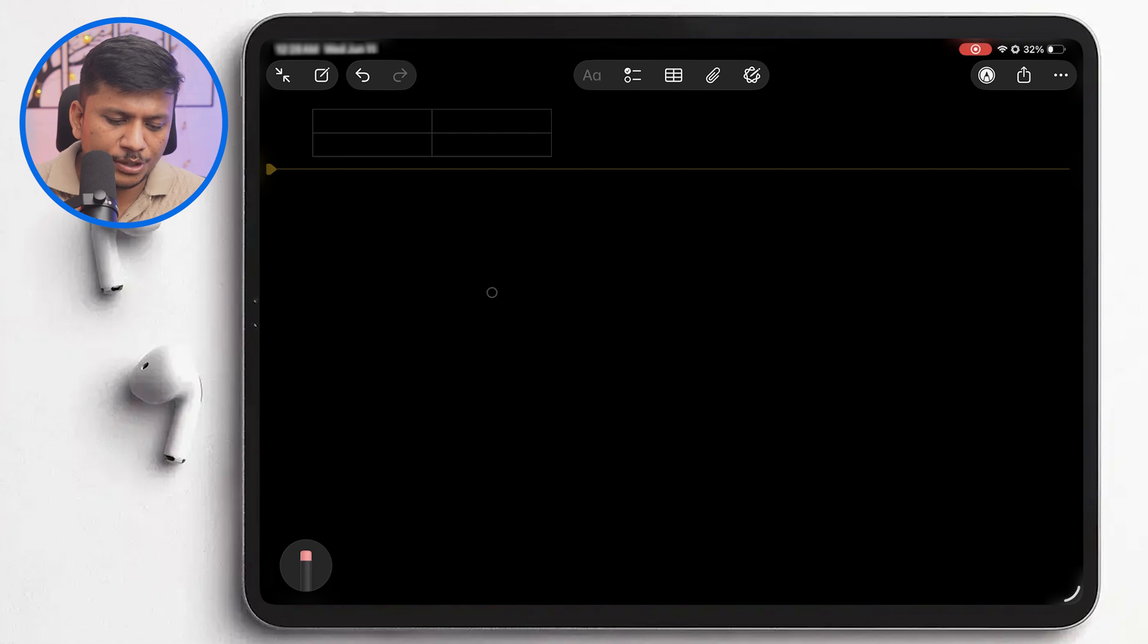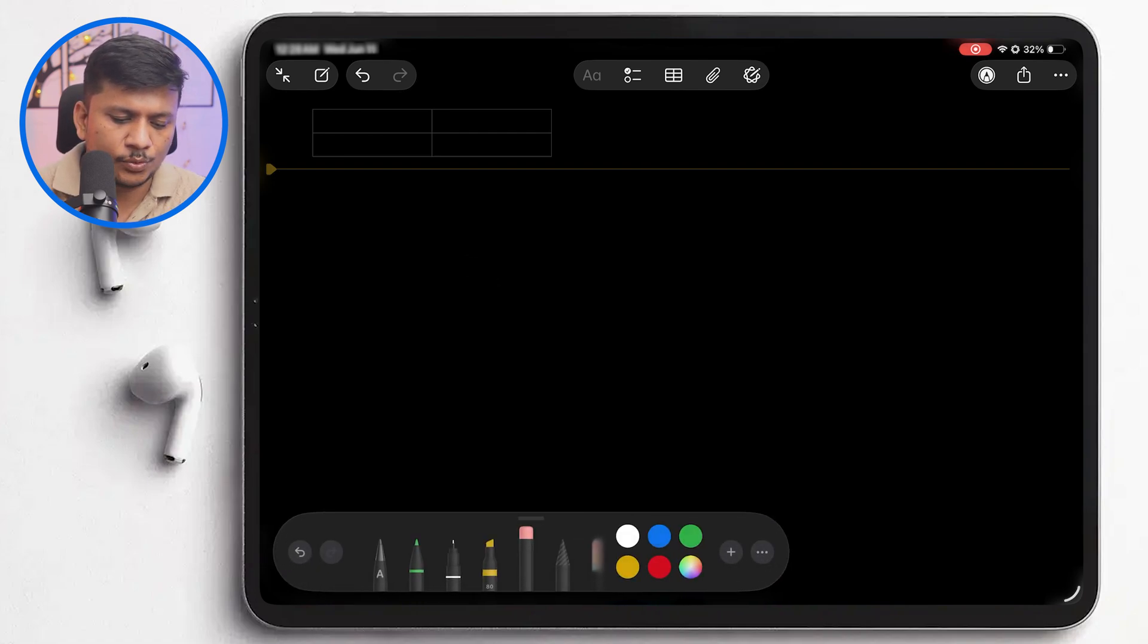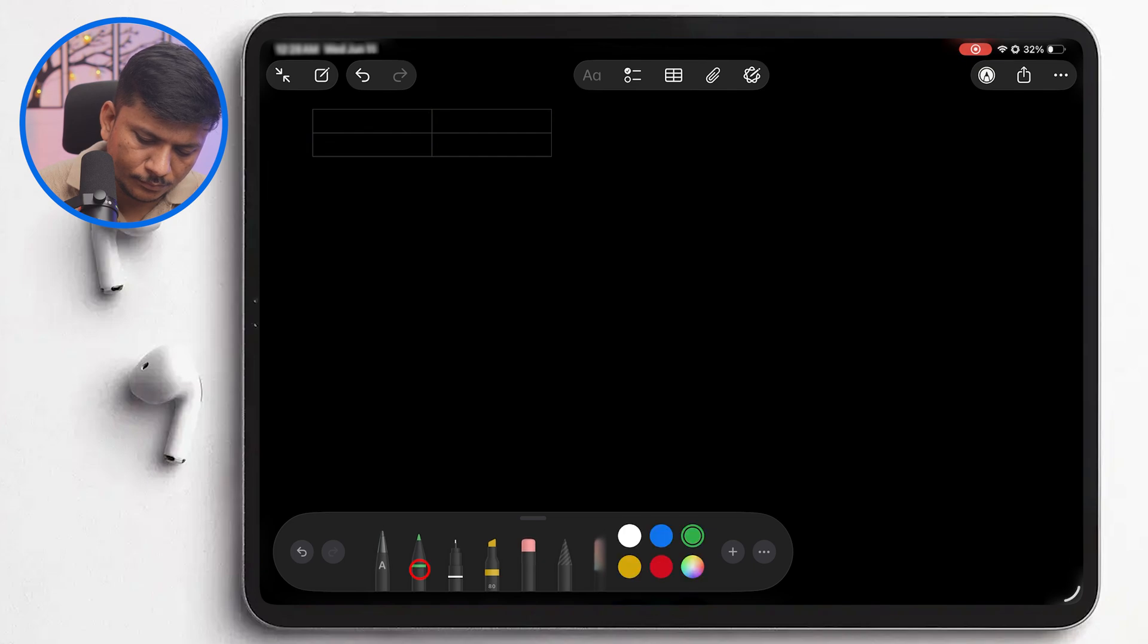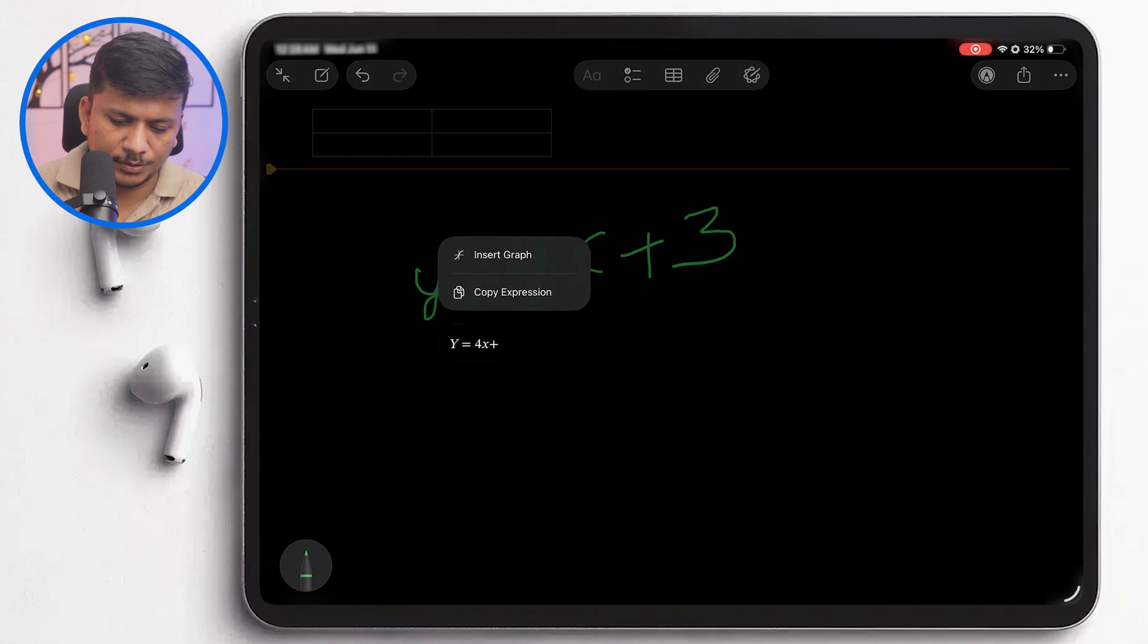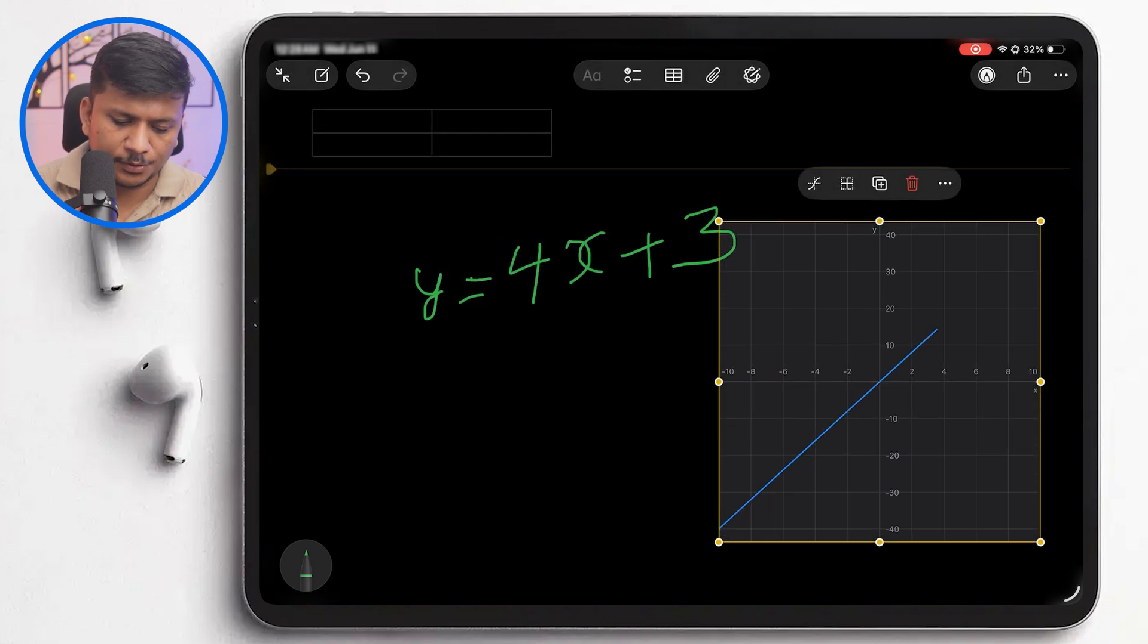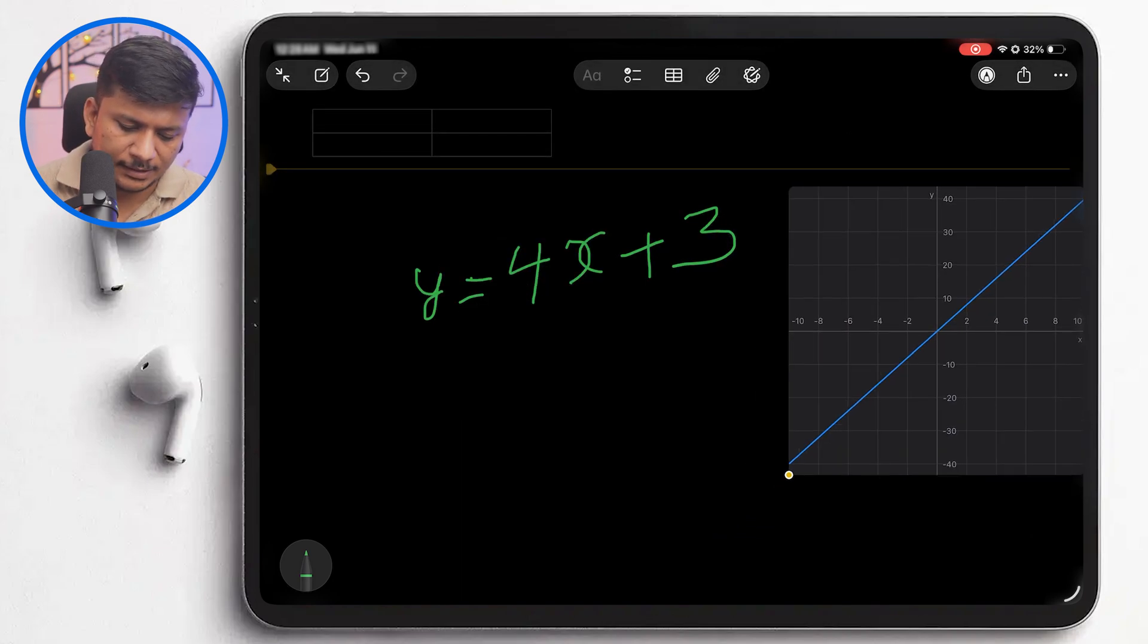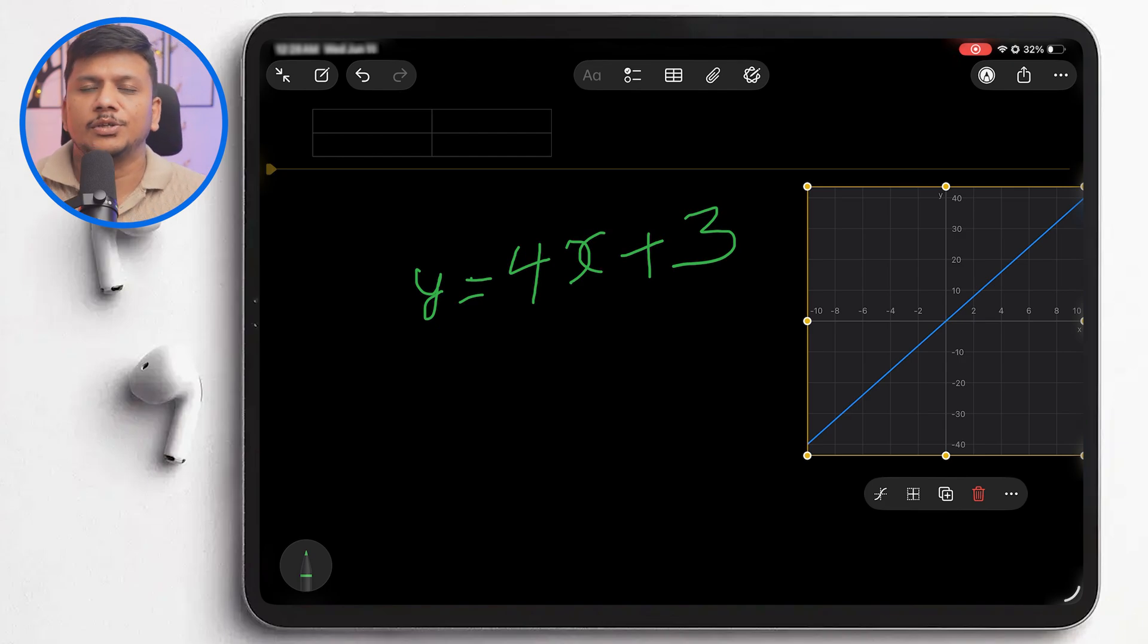Let's first start with a 2D graph. I'm going to type y = 4x + 3, and if I hit equals, we have the option of plotting graph. This is a 2D graph that we're used to plotting.